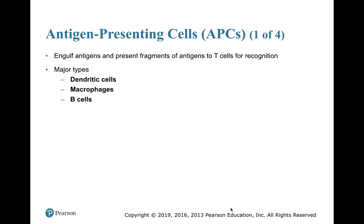I'm going to try to cover the B cells as well, because B cells, in addition to what they do, are also antigen-presenting cells. Antigen-presenting cells, or APCs, engulf antigens, break them into little fragments, and those fragments have antigenic determinants on them, and they present them to T cells for recognition. The major types of antigen-presenting cells are dendritic cells, macrophages, and B cells.